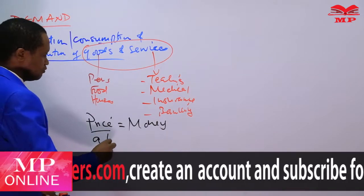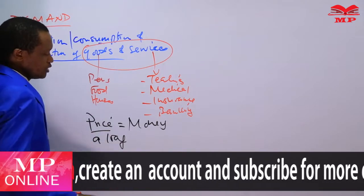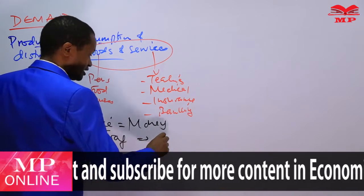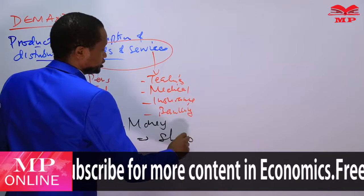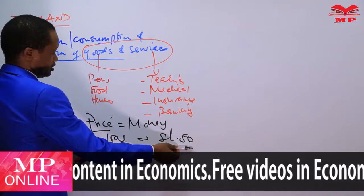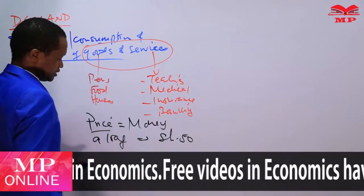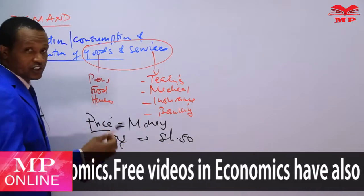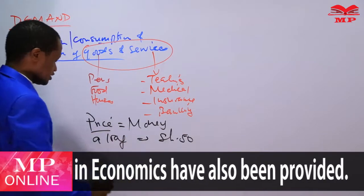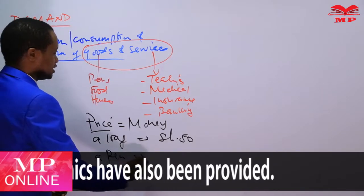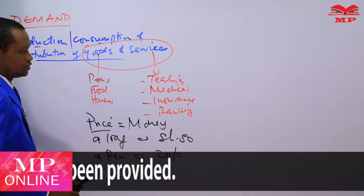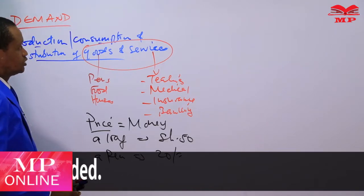For example, a loaf of bread may be priced at 50 shillings — that is what we call the price, the exchange value expressed in terms of money. Similarly, a pen may be quoted at 20 shillings. So that is what price means.